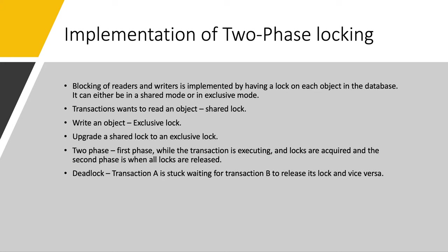Since so many locks are in use, it can happen that transaction A is stuck waiting for transaction B to release its lock, and transaction B is stuck waiting for transaction A to release its lock. This situation is called a deadlock. Some databases automatically detect deadlocks between transactions and abort one of them so that the others can make progress. The aborted transaction then needs to be retried by the application.